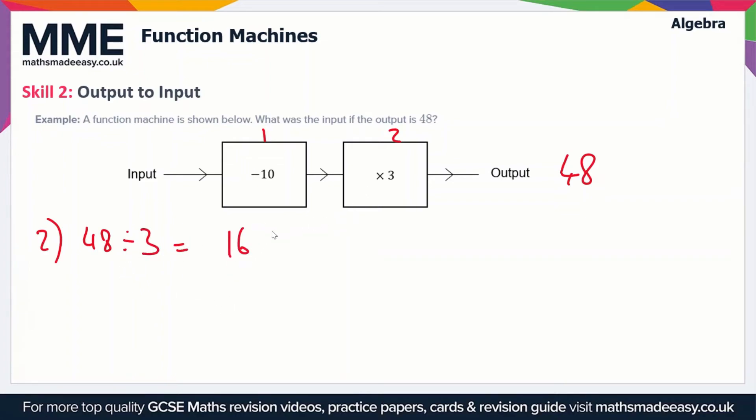Therefore, after the first operation, the output was 16. That first operation subtracts 10, so we need to do the reverse. We get 16 plus 10, and that gives us 26. So our initial input was 26.